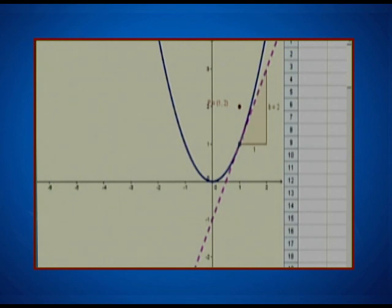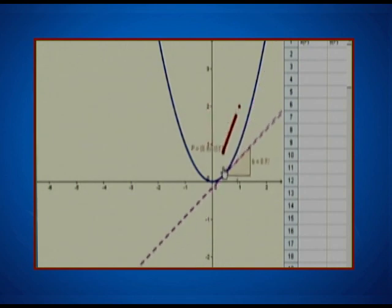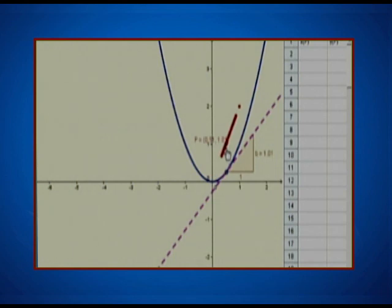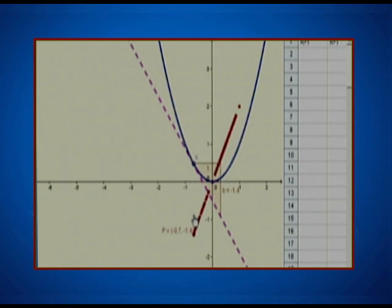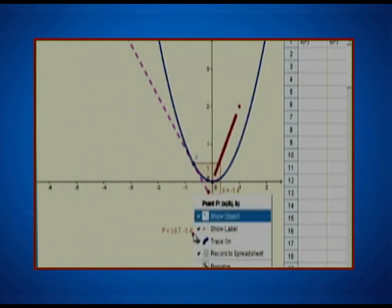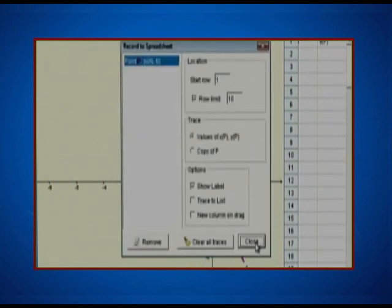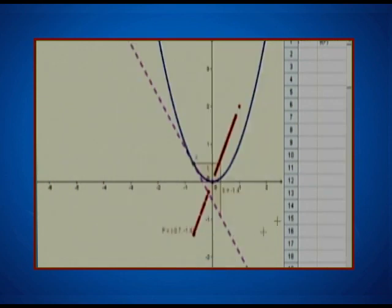Note that as I change the position of point A, the position of point B also changes. You can see that it is leaving a certain trace behind. And also, there is a certain relation between the x-coordinates of point B, which you can see resulting in a certain list on the table on the right-hand side.